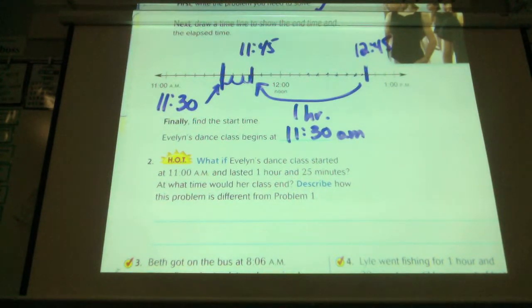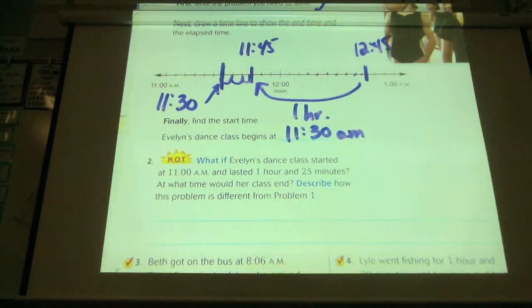What if her dance class started at 11 and lasted an hour and 25 minutes? At what time would her class end? Describe how the problem is different than number one. So there's actually two differences. I want you guys to think about what way are they different.